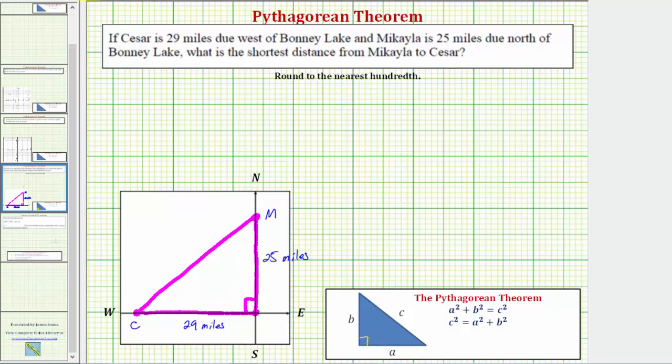So looking at our right triangle, let's let a equal 29 miles, b equal to 25 miles, and c would be the unknown length, which is the shortest distance between Michaela and Caesar.